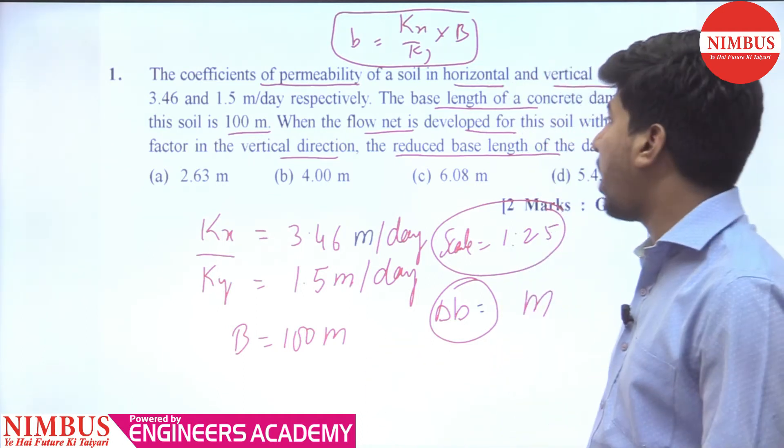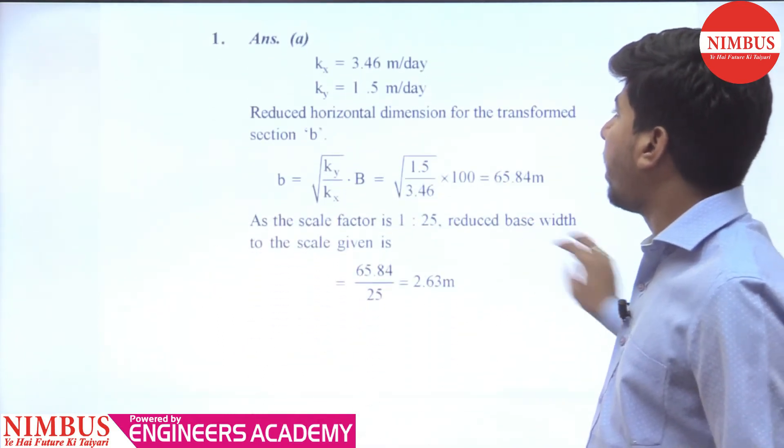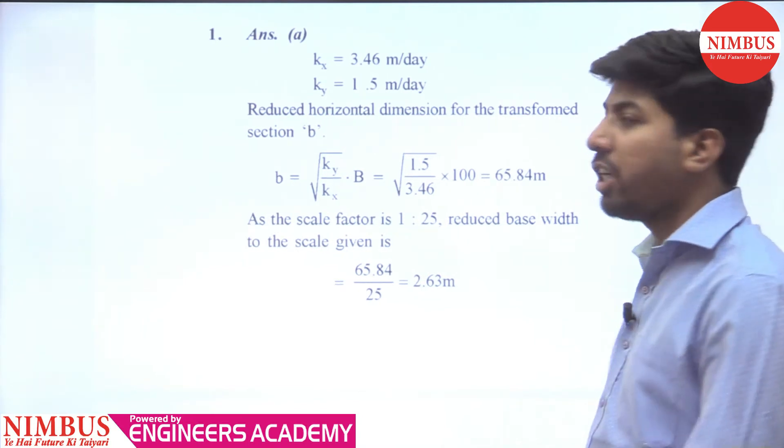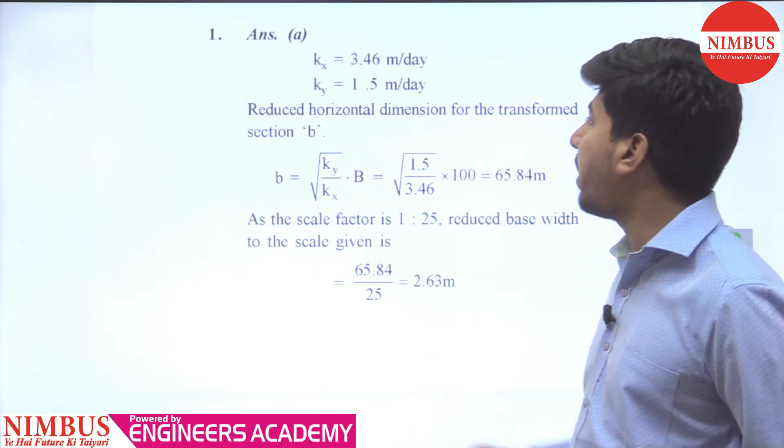We have to talk about the actual base length, which is reduced base length. So we have to talk about kx value given 3.46 meter per day and ky vertical direction is 1.5 meter per day.